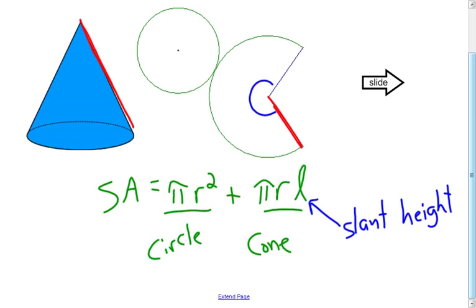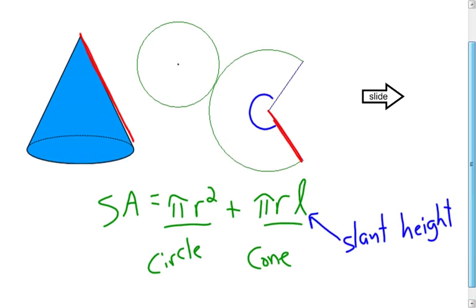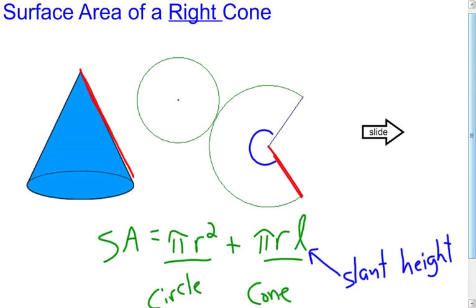Another little formula that unfortunately you're just going to have to remember when trying to find the surface area of a cone, or if it gives you the surface area and asks you to find the radius or the slant height, you'll be able to use that. That's going to conclude the lesson portion on surface areas of pyramids and of cones.